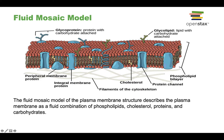The plasma membrane is a bilayer of these phospholipids. You can see there are two rows, one row on the top and one row on the bottom. The hydrophilic heads are pointing towards the outside — one side is outside of the cell, the other side is inside of the cell.